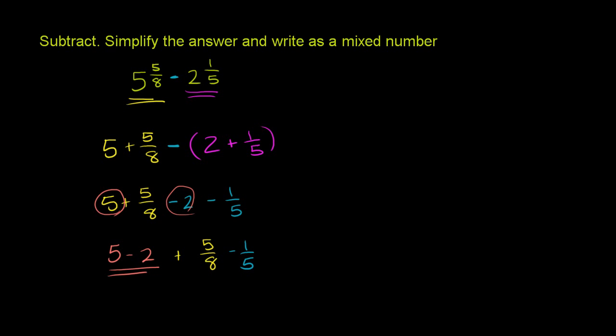And then you have plus 5 eighths minus 1 fifth. Now 5 minus 2, that's pretty straightforward. That's just 3. But what's 5 eighths minus 1 fifth?